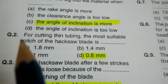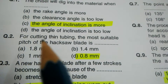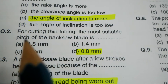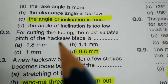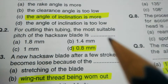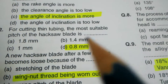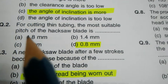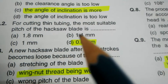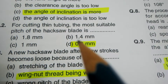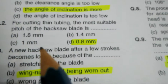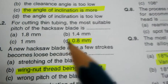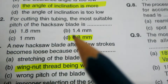Question number two. For cutting thin tubing, the most suitable pitch of the hacksaw blade is? Options: 1.8 mm, 1.4 mm, 1 mm, and 0.8 mm. The correct answer is 0.8 mm.